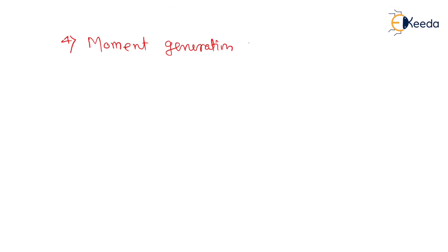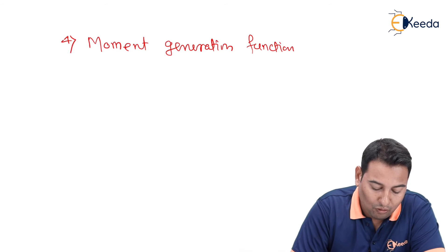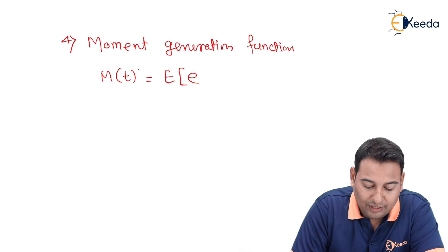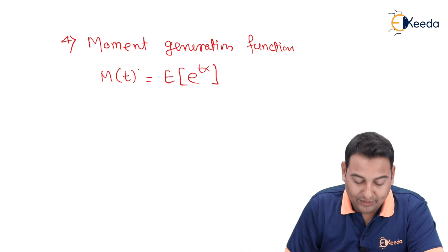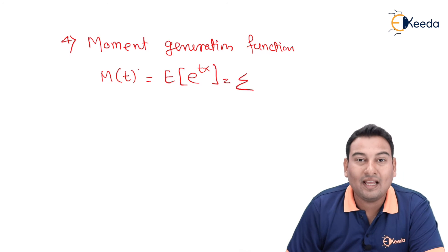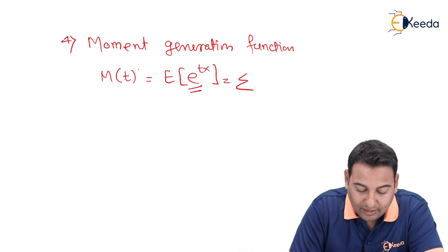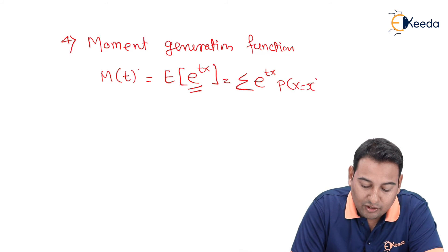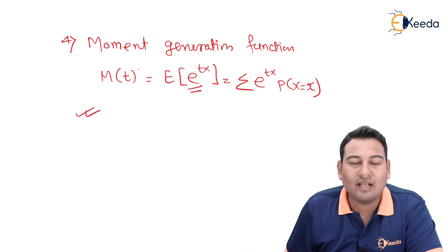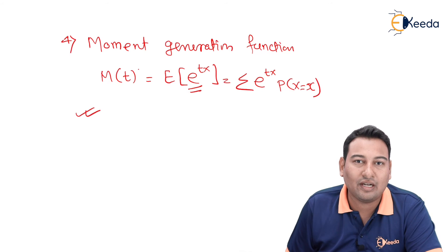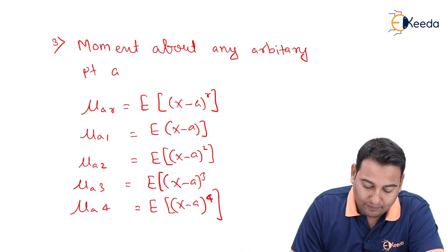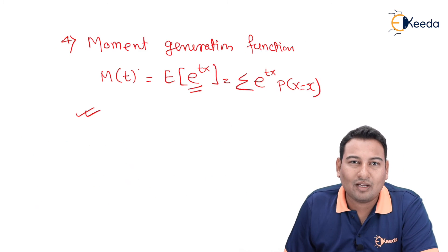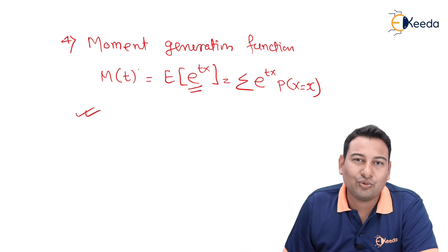The fourth formula is the moment generating function. The formula is M of t equals expectation of e raised to tx. As discussed, expectation is summation of x times p(x), so here it becomes summation of e raised to tx times p(x). These are the four formulas required for solving problems based on moments and moment generating function. The most important thing is to remember the trick for central moments. In the next videos we'll discuss how to use these formulas.